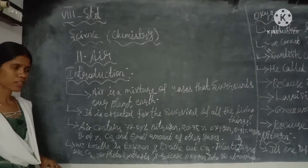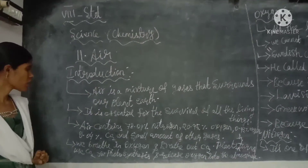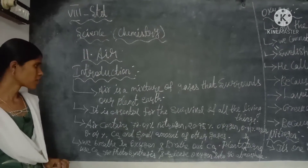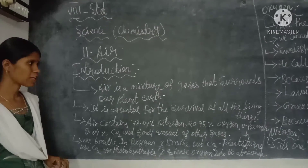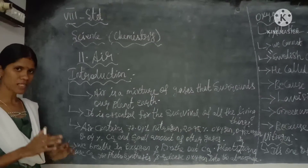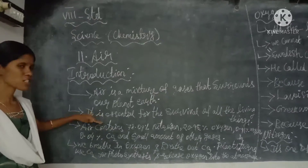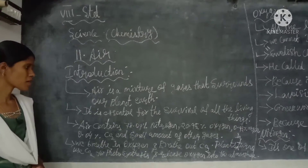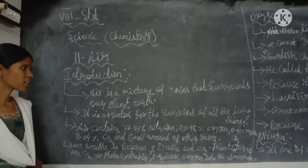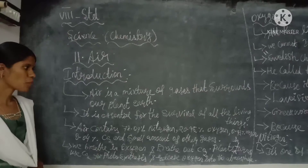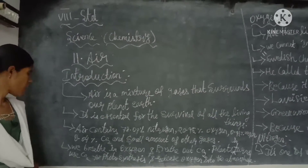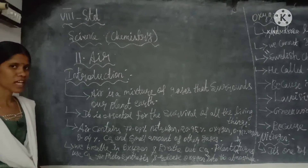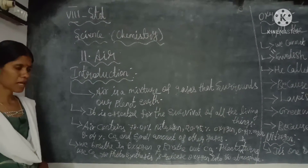Air is present on our planet Earth and is essential — meaning very important — for the survival of all living things. Air contains 78.09% nitrogen, 20.95% oxygen, 0.93% argon, 0.04% carbon dioxide, and a small amount of other gases such as helium.